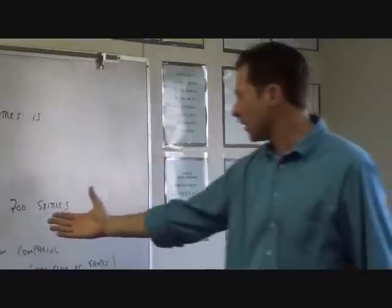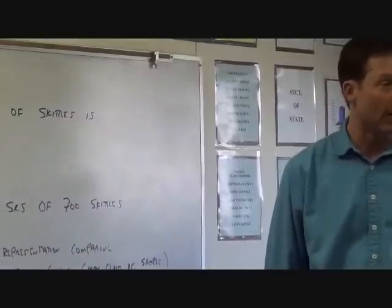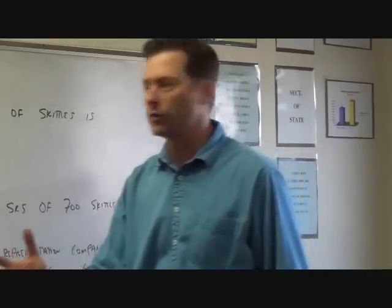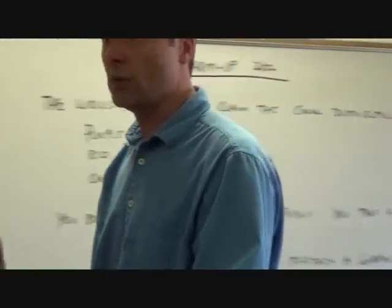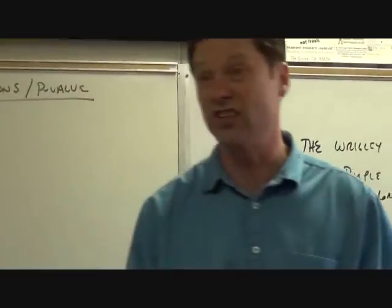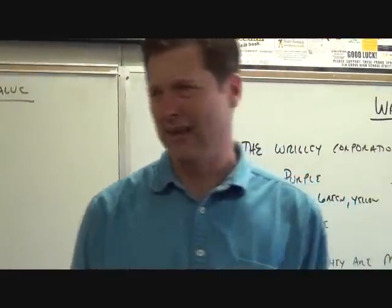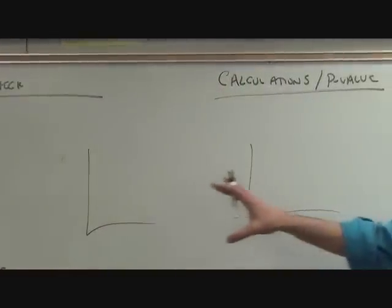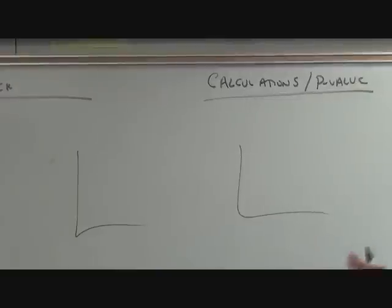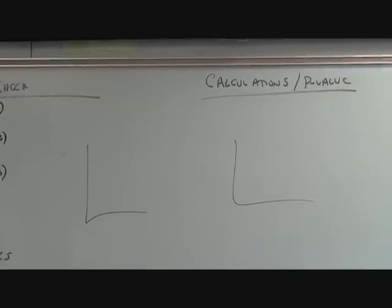I'm going to take a random sample of Skittles to see if I can prove the Wrigley Corporation wrong or not. One of the first things we're always going to do when we get data is draw a picture and see what it looks like — see if our picture says there are differences. I saw some people draw two different graphs, one with what they say is true and one with what we got. I don't want to be looking back and forth seeing if things are the same or not.